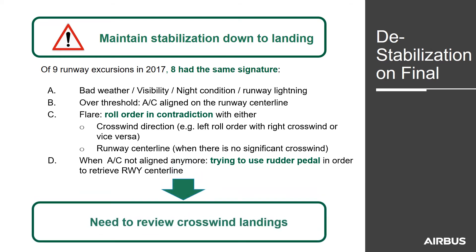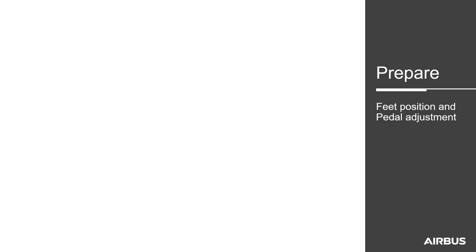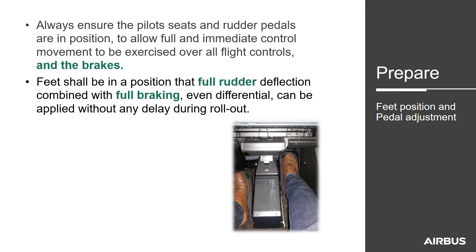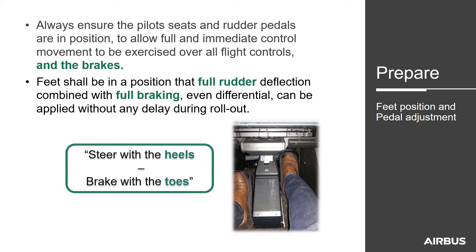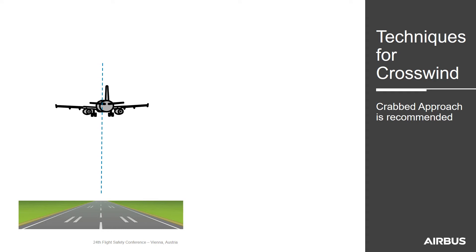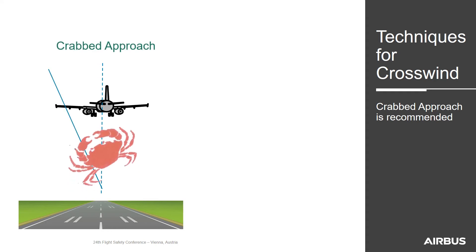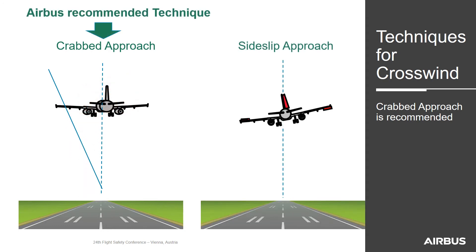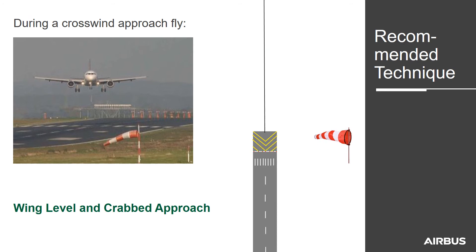Therefore, there is a need to review crosswind landing technique. First, be prepared for the crosswind landing. Always ensure that the pilot seat and rudder pedals are positioned to allow full and immediate control movements across all flight controls and brakes. Feet should be positioned so that full rudder deflection combined with full — even differential — braking can be applied without delay. Remember: steer with your heels and brake with your toes. The recommended technique is either the crabbed approach or the sideslip approach, with the Airbus-recommended technique being the crab. During the approach, fly wings level and keep the crab angle until the end.